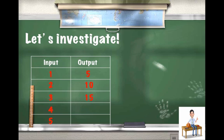And we needed to represent it with an algebraic expression. We discovered that to get from each input to the output, we had to multiply by 5. Pretty straightforward.